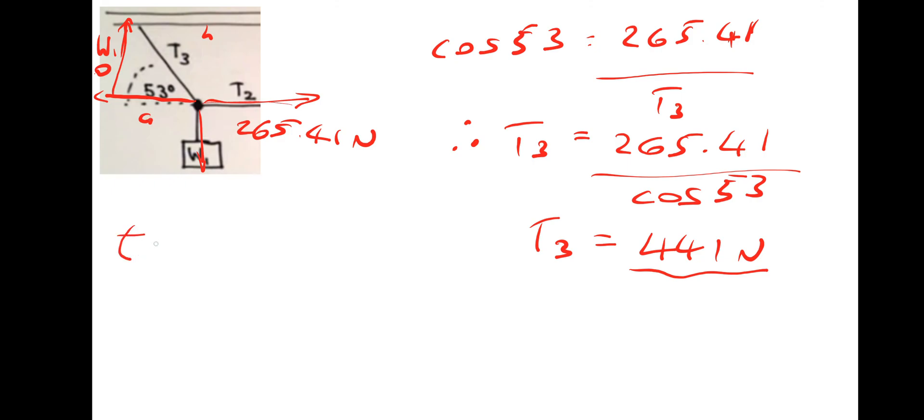So tan 53 is equal to opposite divided by adjacent. So W1 divided by the adjacent which is the 265.41 newtons.